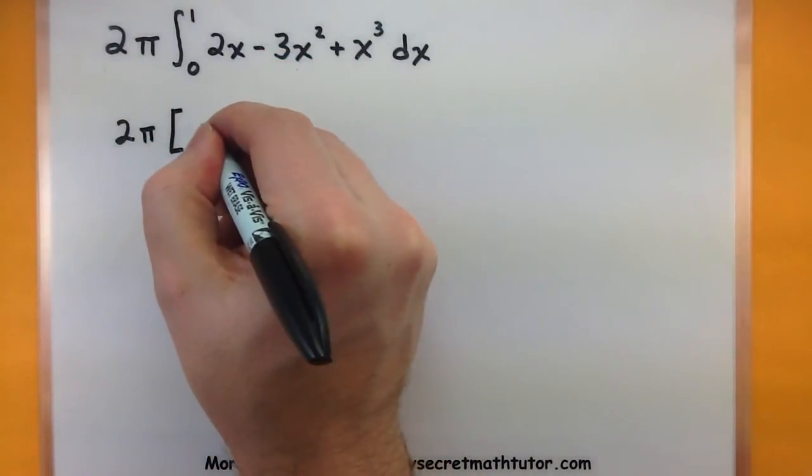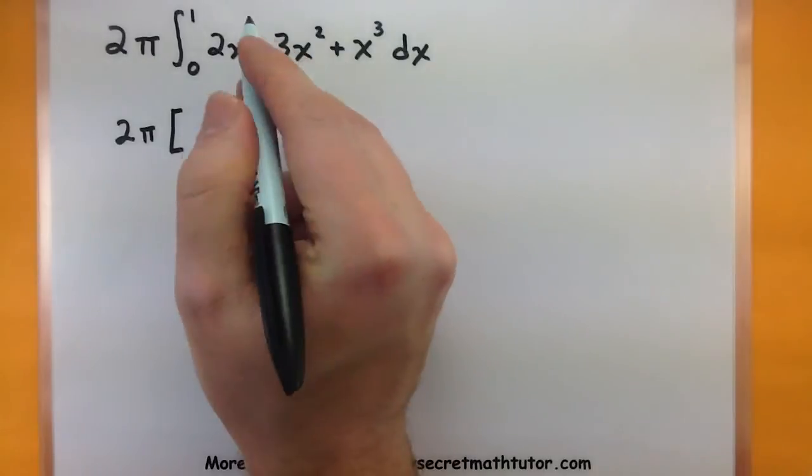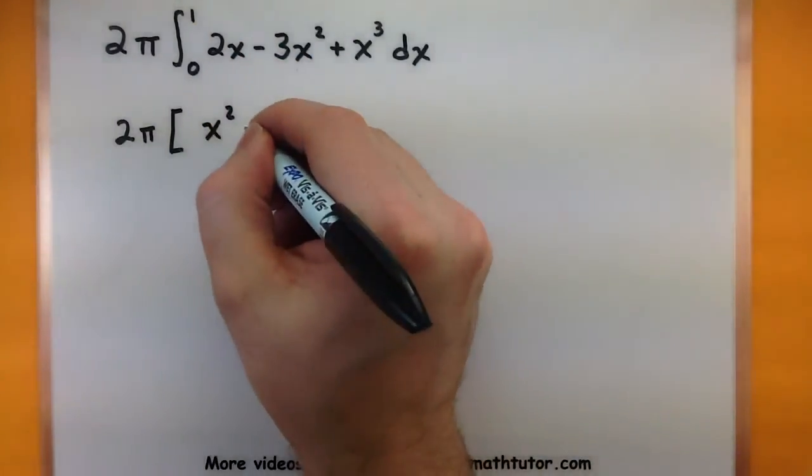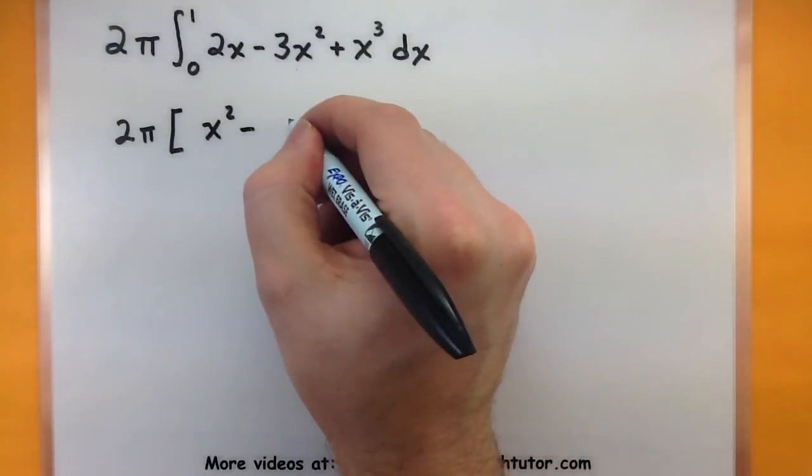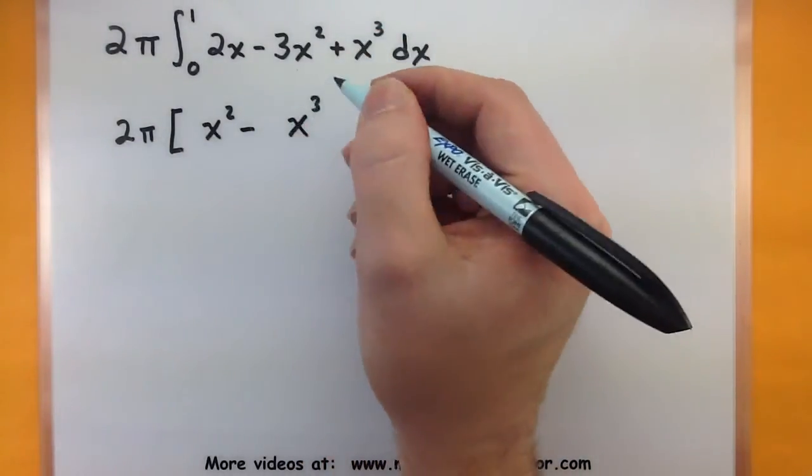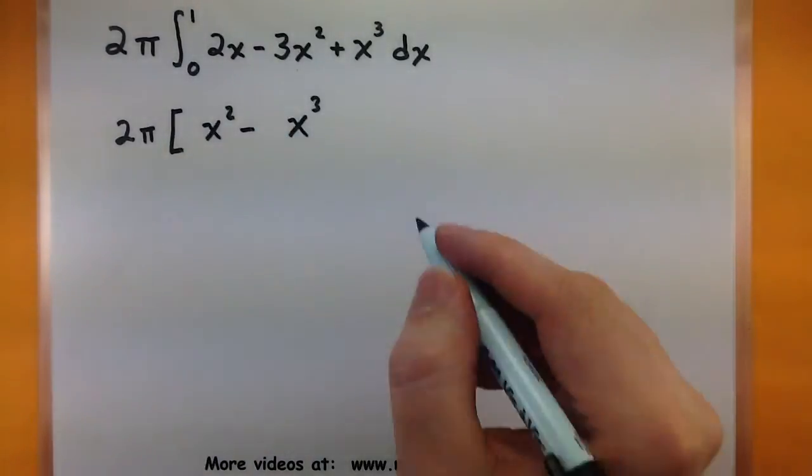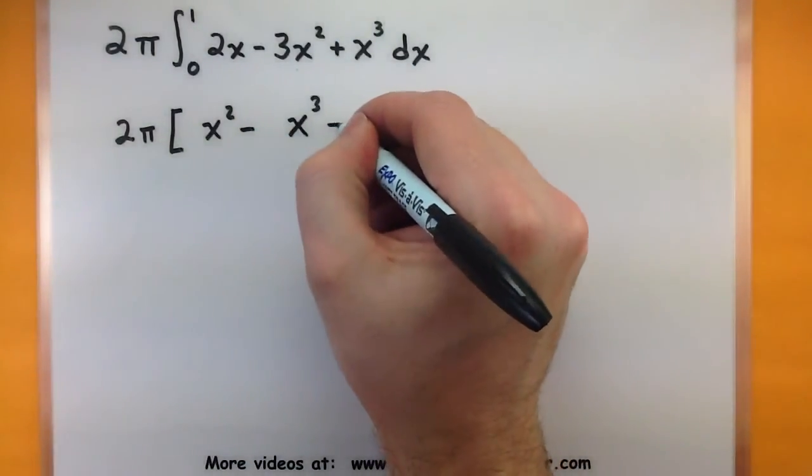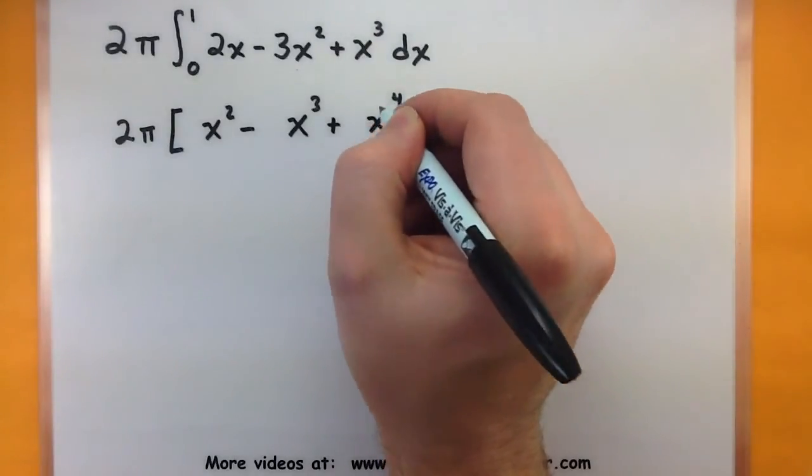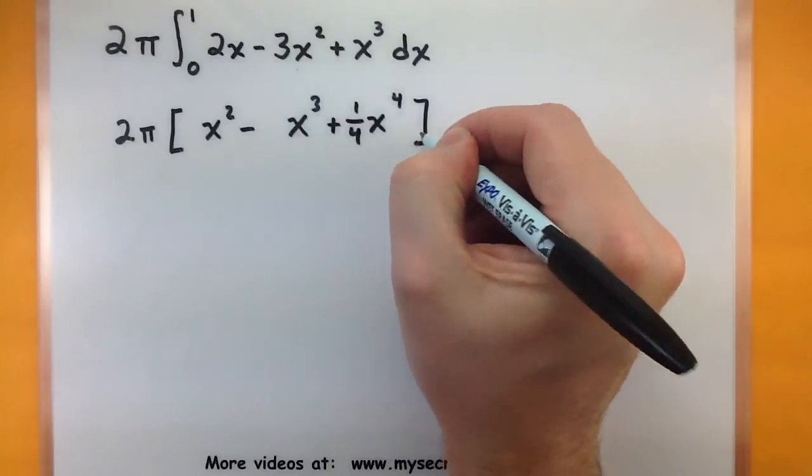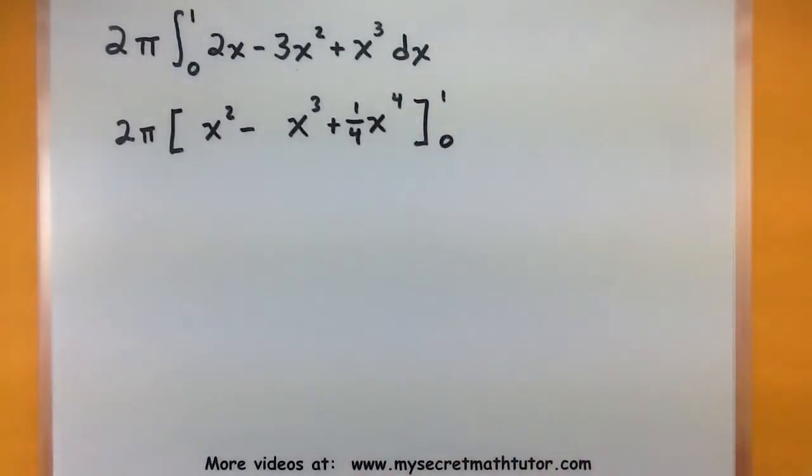So adding 1, this will give us x squared. 2 divided by the new 2 will be just 1. So no need to write a coefficient. Add 1 to this power will become x cubed. Divide 3 by 3. That's 1. Again, no need to write that 1. Plus x to the 4th. Divide by 1 4th. From 0 to 1.